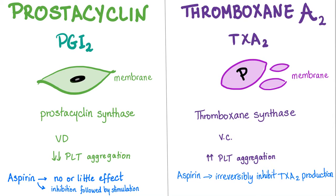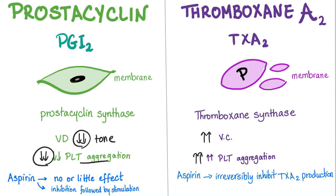If you are a mnemonic maniac, you can think of prostacyclin as decreased and decreased: decreased vessel tone and decreased platelet aggregation. And thromboxane A2 as increased and increased: increased vessel tone and increased platelet aggregation.